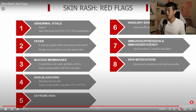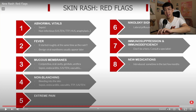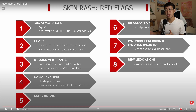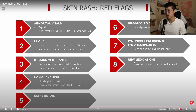Nikolsky sign is another one you'll hear about — this is basically where rubbing of the skin causes it to slough off. That can be seen in various diseases, but one of the more concerning ones would be pemphigus vulgaris. And then any patient who has immunosuppression, immunodeficiency, or new medications that could potentially be culprits for a rash — these are all red flags to consider when looking at a rash.